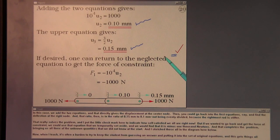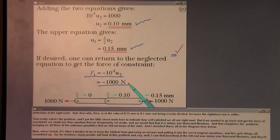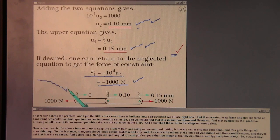But if we wanted to go back and get the force of constraint, we could use that equation that we temporarily set aside and we would find that it is minus 1,000 newtons. And that completes the problem, bringing us all three of the unknown quantities that we did not know at the start. And I sketch those all in the diagram here below.